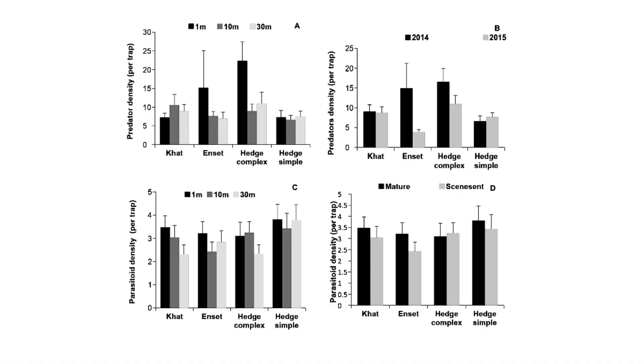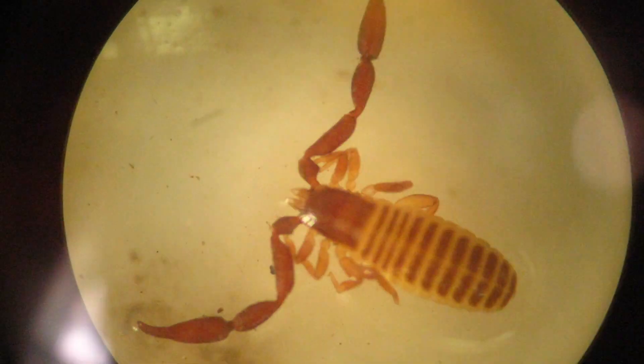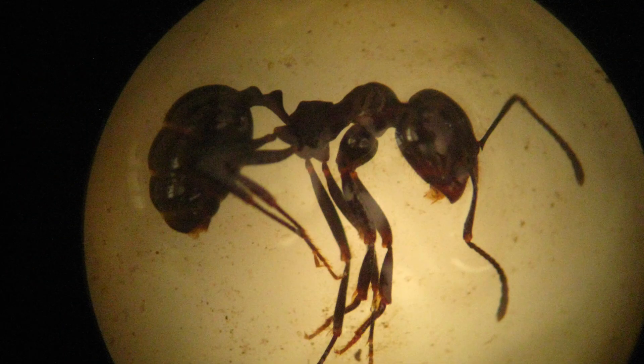We found that maize fields adjacent to complex hedgerows or endsets were hosting significantly higher predator densities than maize fields adjacent to jatropha or simple hedgerows, and the further away we were going from the border, the fewer predators were found. However, the abundance of parasitoids and parasitic flies was not influenced by border type.